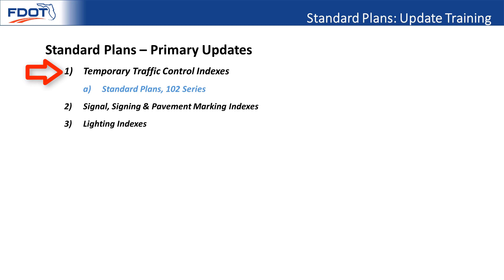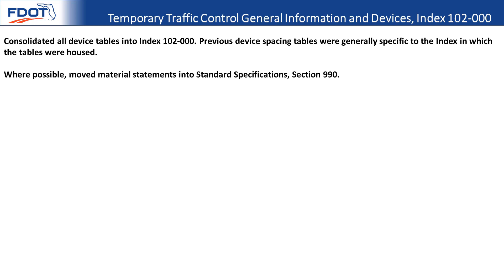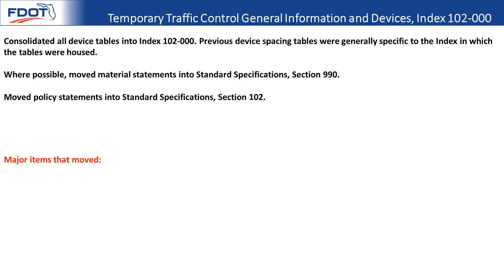Some of the main things that were done are that all of the device tables that previously existed for signing and channelizing devices have been consolidated into index 102-000, which was previously index 102-600. Most of the material statements from 102-600 have moved into standard specifications section 990. There were also some policy statements that moved into standard specifications section 102.